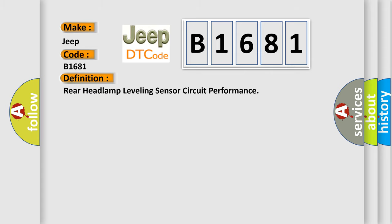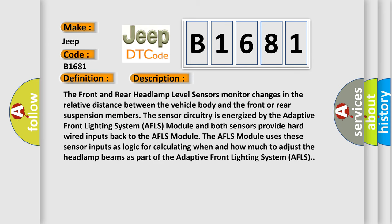The basic definition is: Rear headlamp leveling sensor circuit performance. The front and rear headlamp level sensors monitor changes in the relative distance between the vehicle body and the front or rear suspension members. The sensor circuitry is energized by the Adaptive Front Lighting System (AFLS) module, and both sensors provide hard-wired inputs back to the AFLS module. The AFLS module uses these sensor inputs as logic for calculating when and how much to adjust the headlamp beams as part of the adaptive front lighting system.